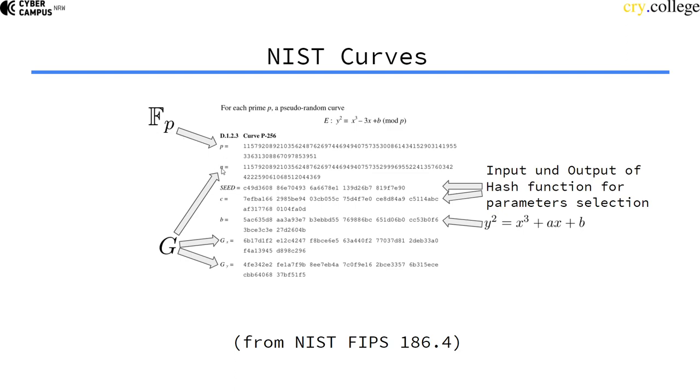N is the order of the generator, meaning how many points it can reach. There are the X and Y values of the generator. There is the B value of the curve equation. And there is a seed and a hash function output.